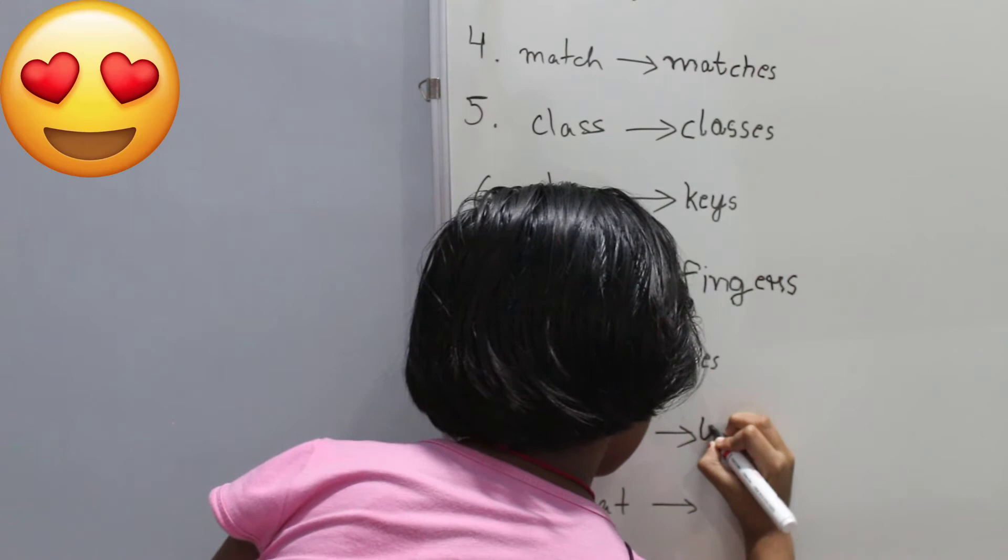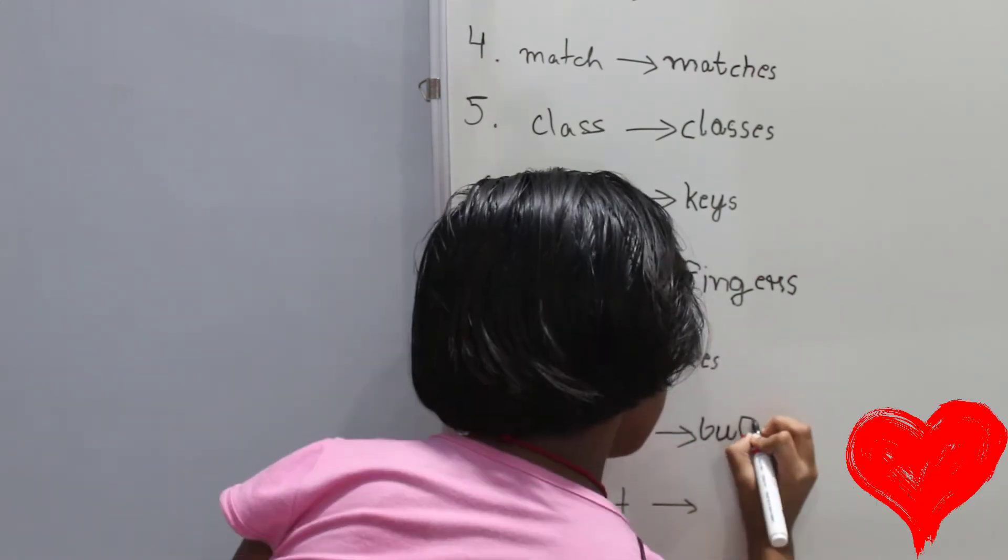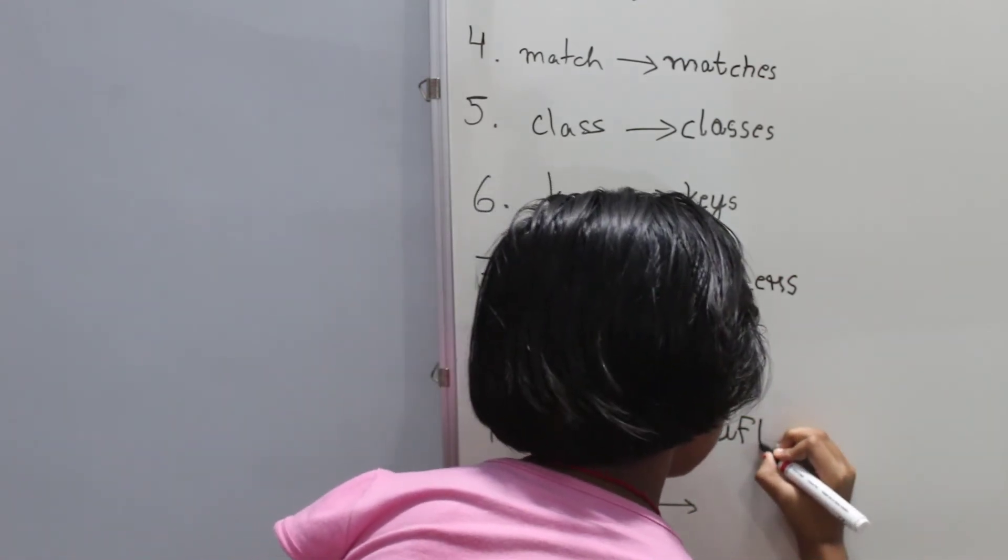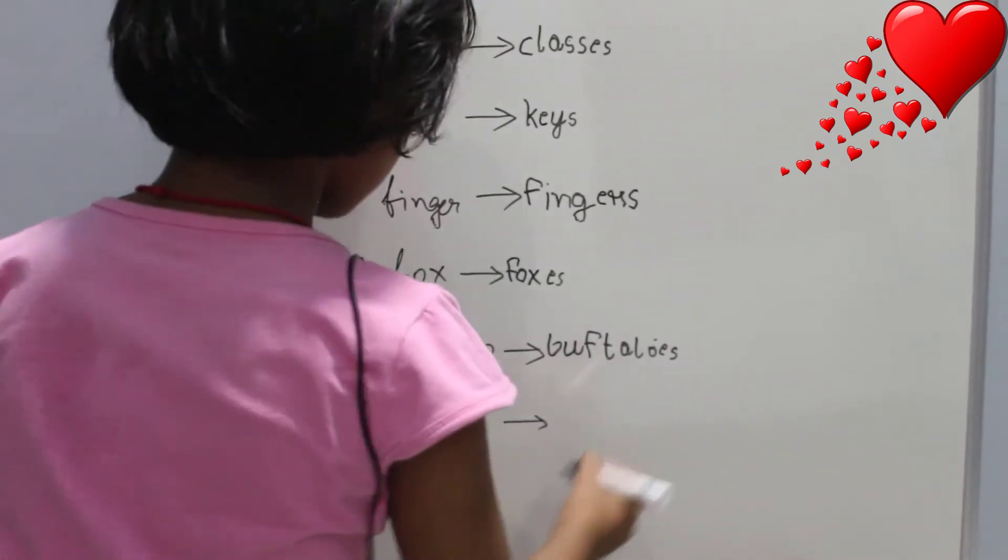So nine number is buffalo. So the answer is buffaloes. Buffaloes. Goats.